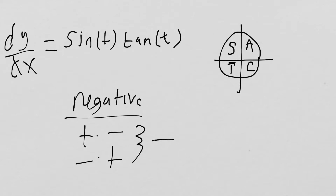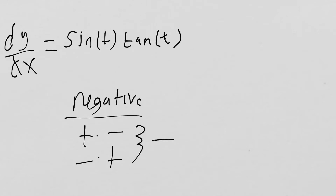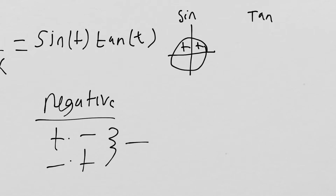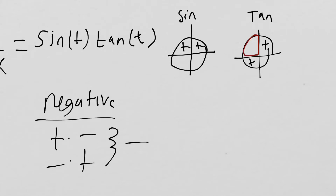So we have that sine is positive, and let's break this down since we're not dealing with cosine. We'll break it down into two circles. This is our sine circle — sine is positive in the top two quadrants. And this is our tangent circle — tangent is positive in the third quadrant and in the first quadrant where they're all positive. We can see that in the second quadrant, tangent is negative but sine is positive.